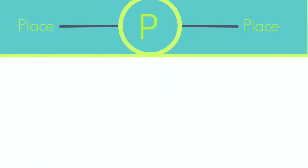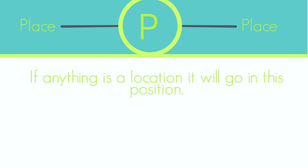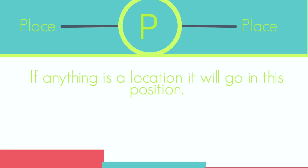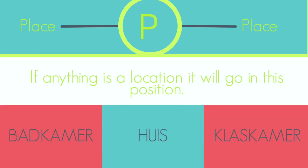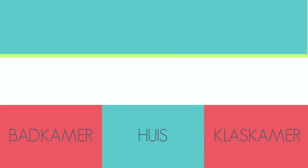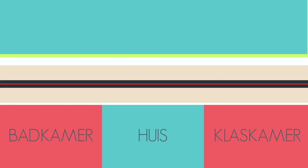The P is next, and it stands for Place. This is a pretty straightforward one. Basically, if anything is a place or a location, it goes in the position of P. Examples of place words are basically anything that you can do something in, like 'bad', 'kamer', 'huis', or 'klaskamer'.